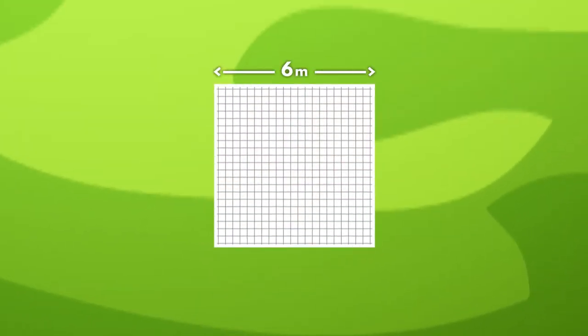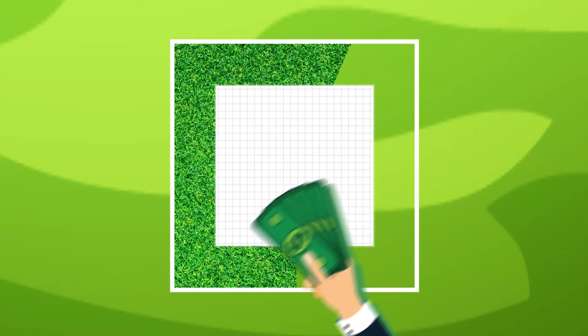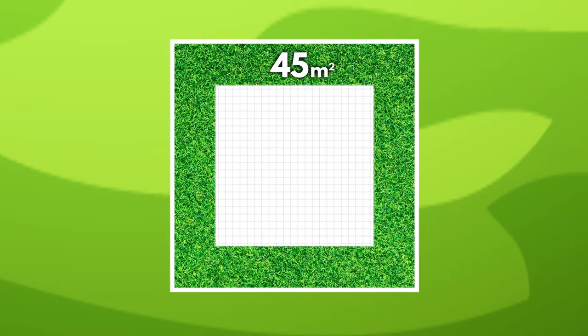each side being 6 meters long. The owner has a budget that allows him to buy 45 square meters of grass and he wants to plant it so that all sides have the same width.